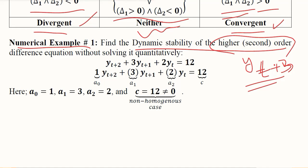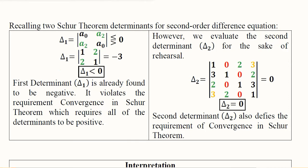We are borrowing the values: a₀, a₁, a₂ and c. All these values are extracted. This c shows we have a non-homogeneous case; however, in Schur's theorem it doesn't get used. Schur's theorem has these two determinants Δ₁ and Δ₂. We have substituted the values and got the final answer that Δ₁ is less than 0.